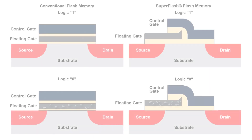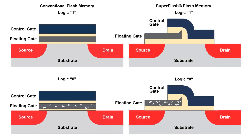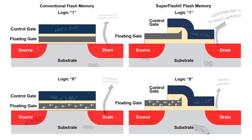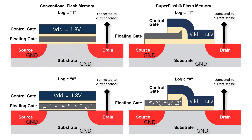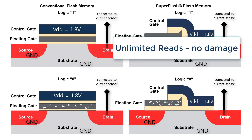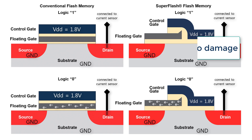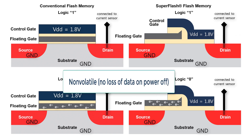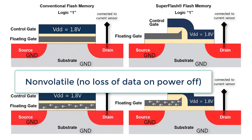Now we can run the memory back down at 1.8 volts to read the results. Notice the change in voltages — these lower voltages will cause no stress on the oxides, so you can read your memory as many times as you want and not damage these cells any further.